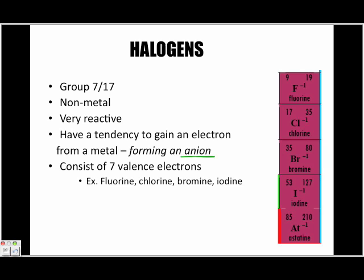Group seven or group 17 consists of seven valence electrons. This is a very important concept to recap from a previous lesson.